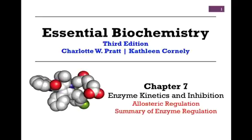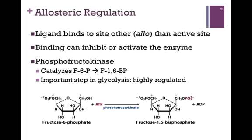In our last lesson on enzyme kinetics and inhibition from Chapter 7, we want to look at allosteric regulation and briefly summarize some of the cellular methods for regulating enzyme activity. In allosteric regulation, a ligand binds to a site other than the active site. Allo means other, and this binding can either inhibit or activate the enzyme. The binding of a ligand to a site other than the active site influences what occurs within that active site.